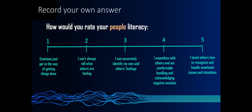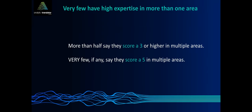And then lastly, how would you rate your people literacy? One would be, you know, emotions get in the way, I just want to do my work. Number two would be, I can't always tell what others are feeling. Number three, I can accurately identify my own and others' feelings. Number four, I empathize with others and I'm comfortable handling and acknowledging when negative emotions are involved. And number five would be, I teach others how to recognize and handle emotional issues and situations. Again, that probably would be a training like a bachelor's in social work or in communication or psychology. So think about what your numbers are. And I will say that when I do this sometimes with an audience, I see a lot of people who are three or higher in multiple areas, but very few, if any, score a five in multiple areas, which shouldn't surprise us. Because we tend to be experts in one area more often than in multiple areas.